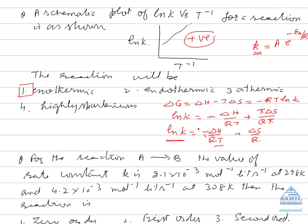When t approaches infinity, k will equal the number of collisions taking place. Another important point: if the activation energy Ea is zero, then e^0 = 1, meaning all collisions will be effective, and therefore k = A (the pre-exponential factor).